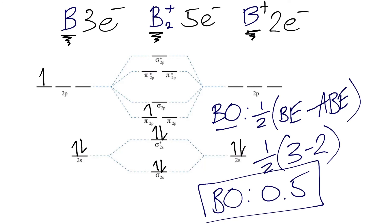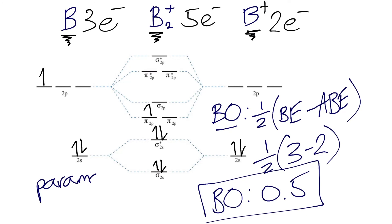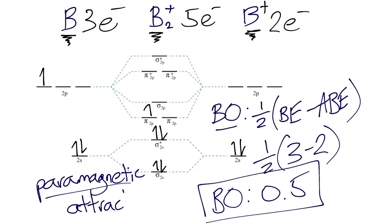Finally, is B2+ paramagnetic or diamagnetic? Because we have an unpaired electron present in the π2p molecular orbital, this means that B2+ is paramagnetic, which means it will be weakly attracted to an external magnetic field.